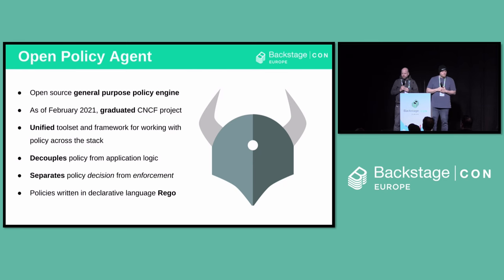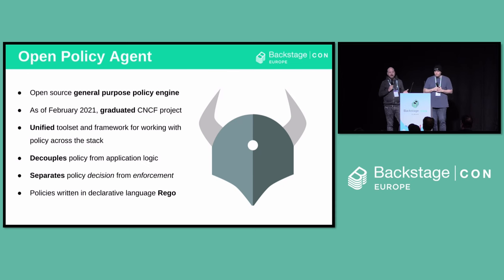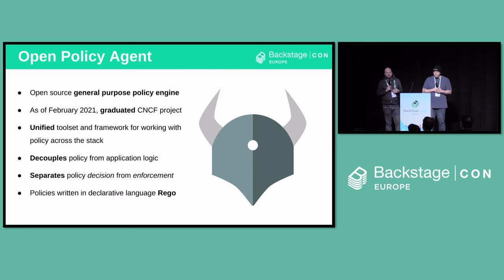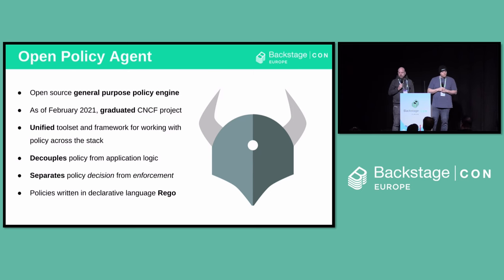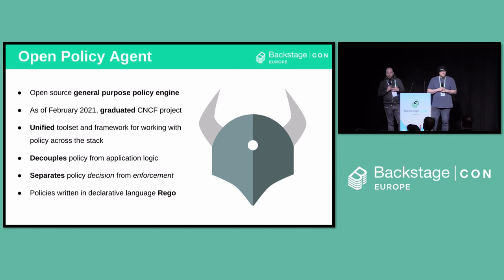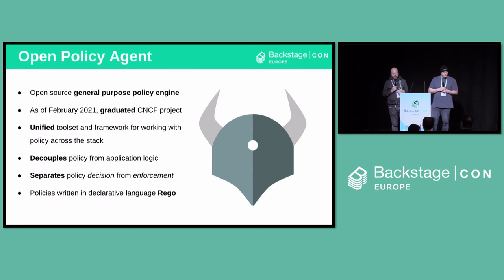So what's OPA? It's an open source, general purpose policy engine. The general purpose part is important — that's really what makes it possible to do things like integrating with Backstage, which wasn't even on the radar when OPA was born. As of 2021, it's a graduated CNCF project, and it was a CNCF project for a long time before that. OPA provides a unified toolset and framework for working with policy across the stack, decoupling policy from application logic so we can work with policy as a first class concept.